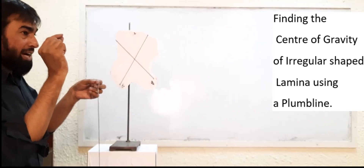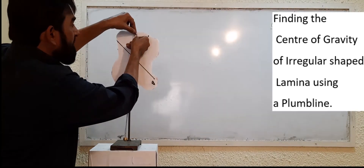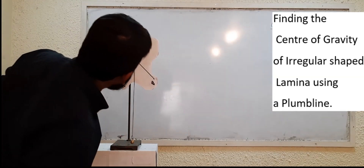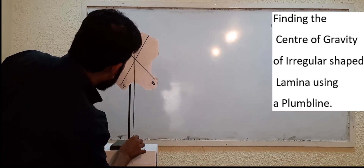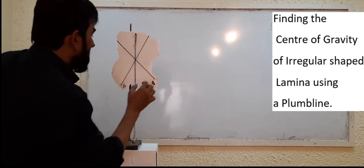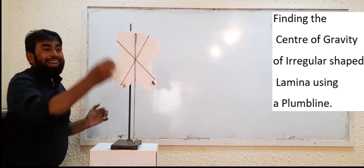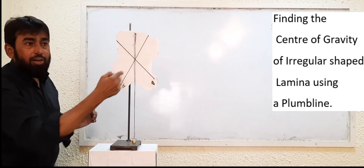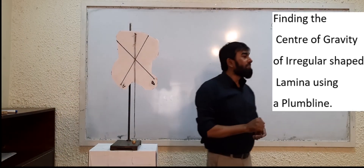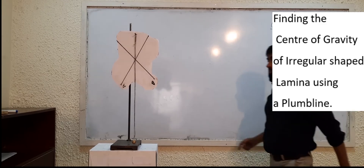There must not be a triangle formed at the intersection. If there is a triangle and it is bigger, your procedure is very wrong; if the triangle is smaller, it is almost correct. The thread must not touch the paper or lamina — that is a very important precaution. You must also use a sharp pencil.